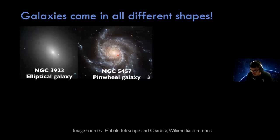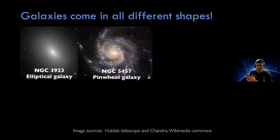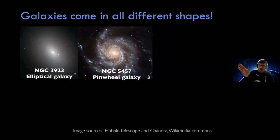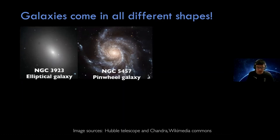Galaxies are generally measured in kiloparsecs. One parsec is basically about three light years. Parsecs are more relevant as an astronomical unit because one parsec is defined by the angular shift you see when observing the same object six months apart — when you're on opposite sides of the Sun. If the angular separation is one arcsecond, we call the distance one parsec. It's easier to estimate galaxy distances in terms of parsecs when using a telescope.